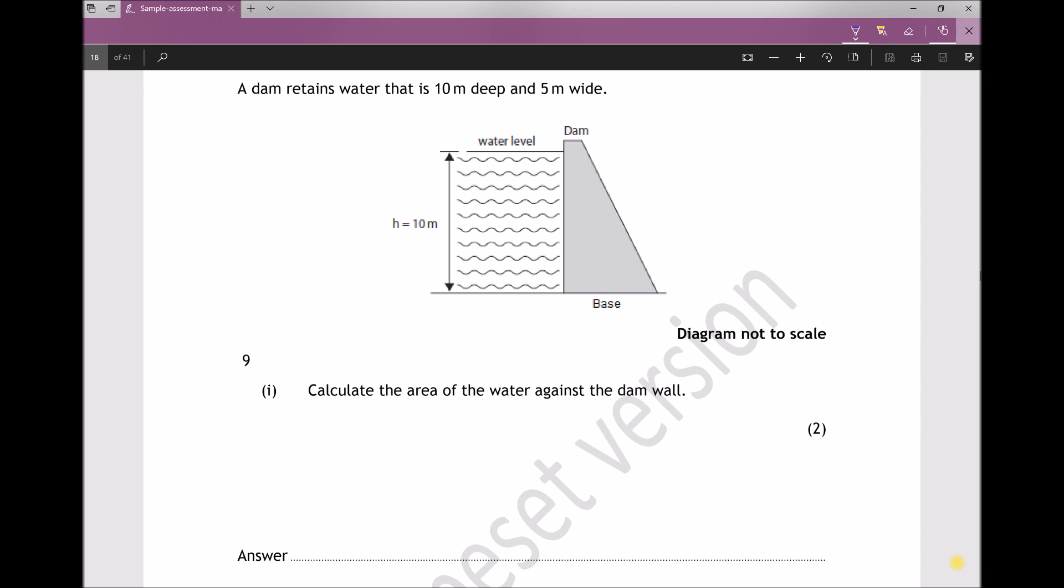The first part of the question asks us to calculate the area of water against the dam wall. This is another question that we've already seen on issue 1 of the sample assessment materials, so it's another one that we need to make sure that we're competent in answering. The only difference here is that it's been split into two parts.